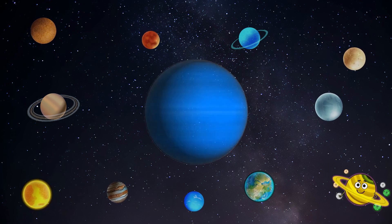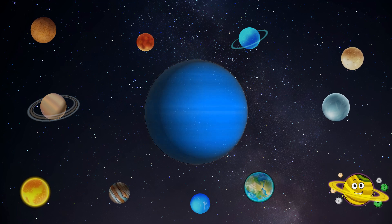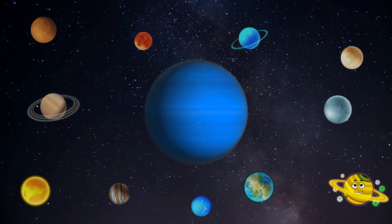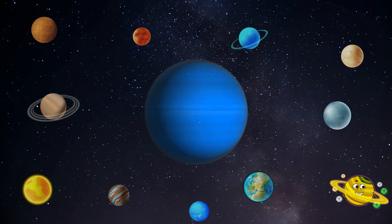Then we meet Uranus, the sideways planet. Uranus is a bit different, spinning on its side like a wobbly top. It's a chilly place with a blue-green color that reminds us of the ocean. Uranus is a quiet planet, but it has a peaceful charm that makes us feel cozy and content.